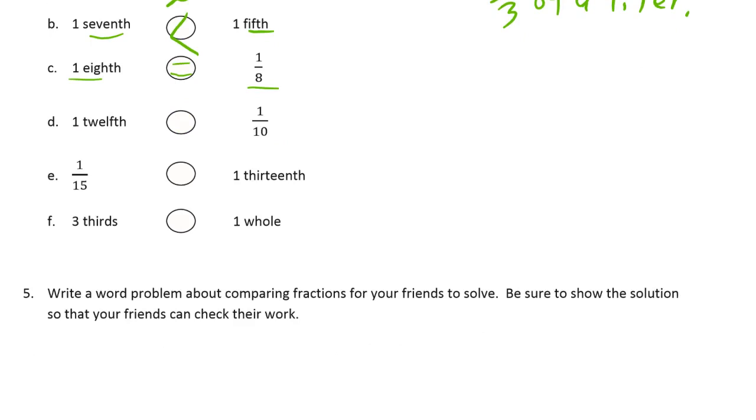Here we have one-twelfth and one-tenth. One-twelfth would look like that. It's a fractional notation. We can see the larger denominator is the twelfth, so that means the tenth is larger amount. One-twelfth is less than one-tenth. We have a fifteenth and a thirteenth. The fifteenth here is going to be the smaller piece. So one-fifteenth is less than one-thirteenth.